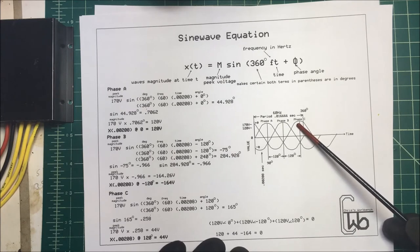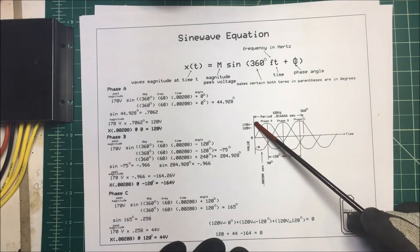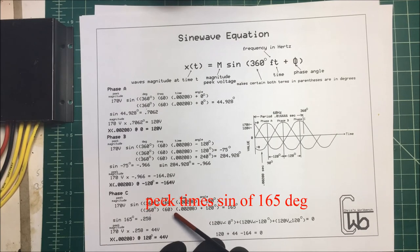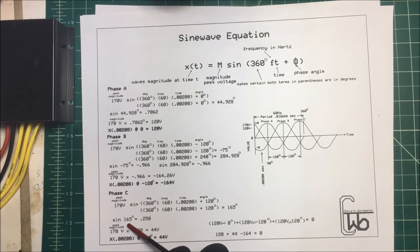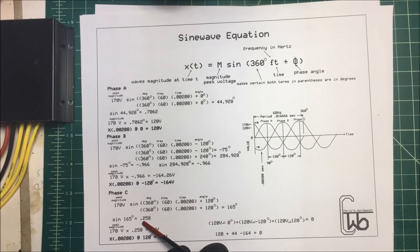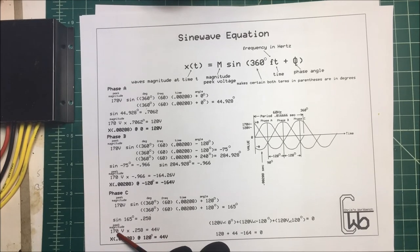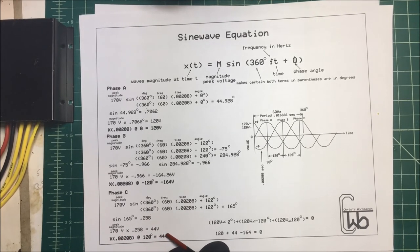Let's take a look at phase C. Now phase C is leading by 120 degrees, so we take our peak voltage times our 360 times 60 times our time plus 120, and that's 165 degrees. Then we take our sine of 165 and that's 0.258, and if we take our peak value times that, it comes out to 44 volts.